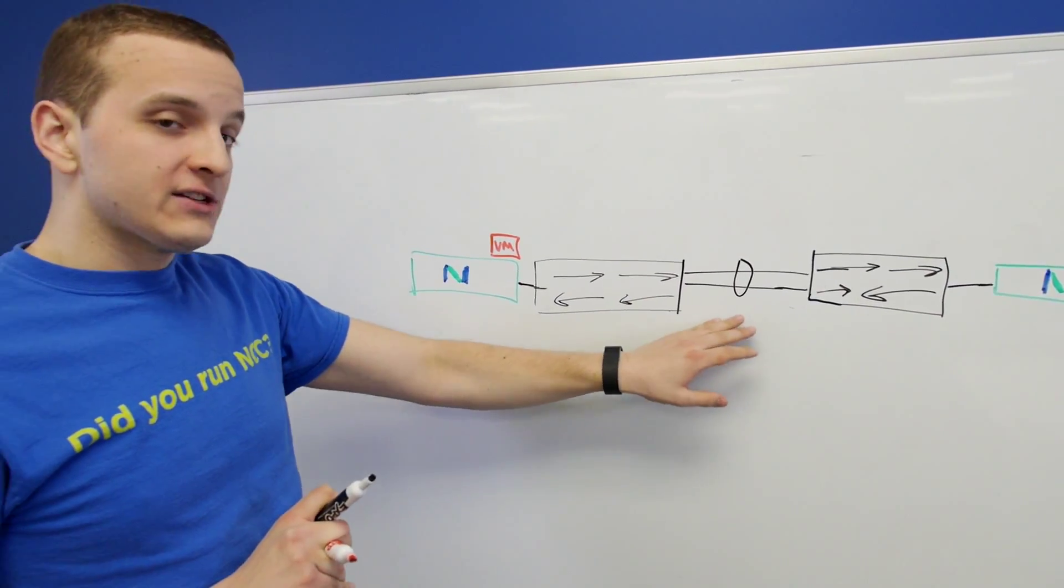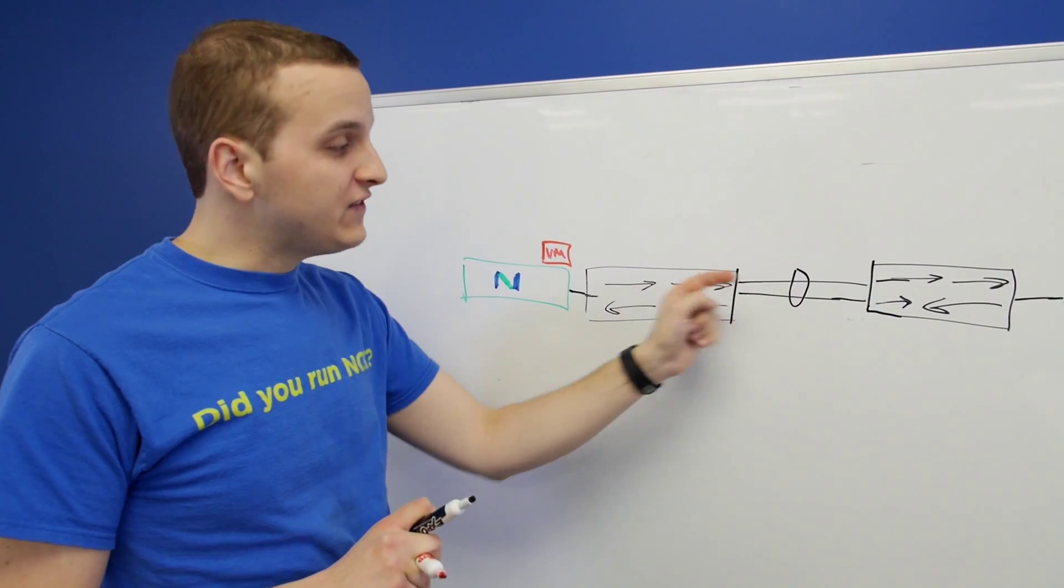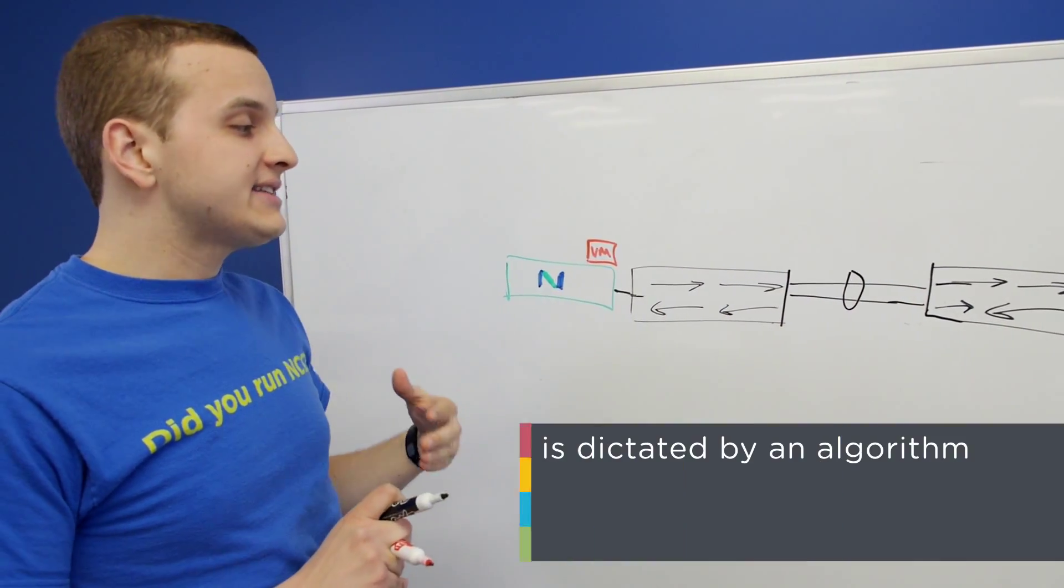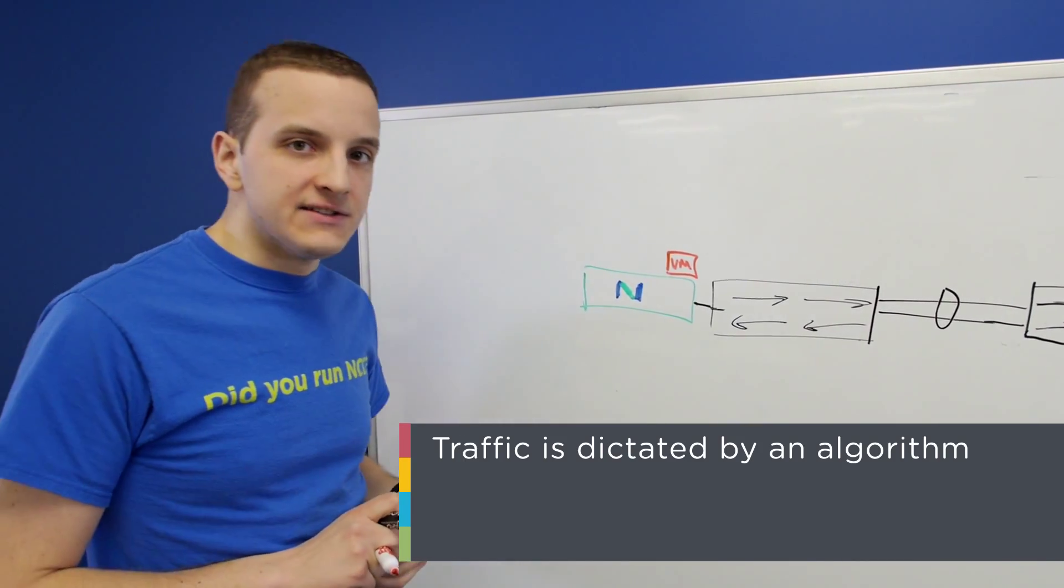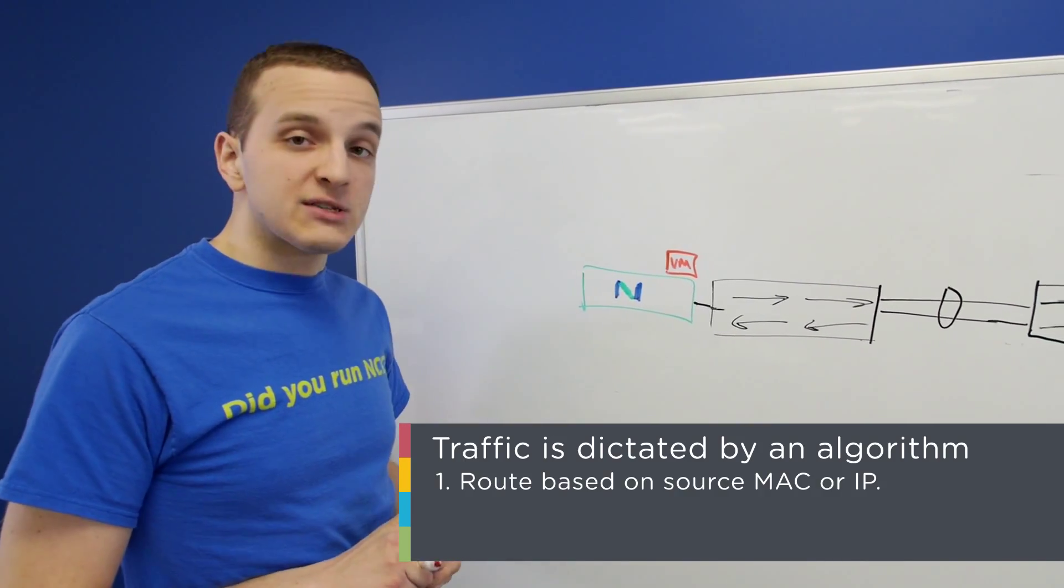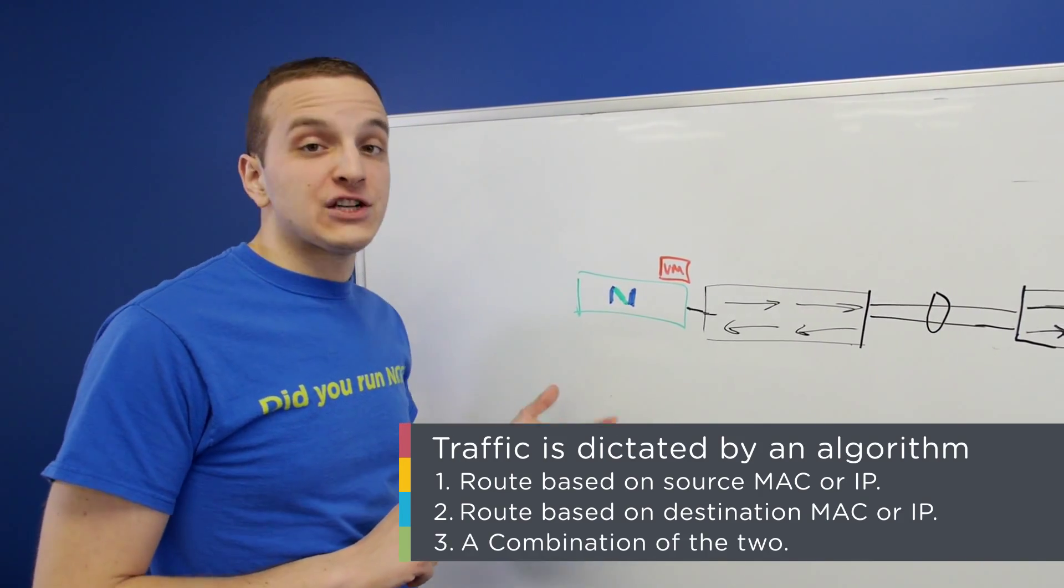Now, the most important thing with port channels to remember is that they're not perfect. It's not 50% of the traffic over one, 50 over the other. Rather, it's dictated by an algorithm. That algorithm most commonly is route based on source MAC IP, destination MAC or IP, or a hash of those two.